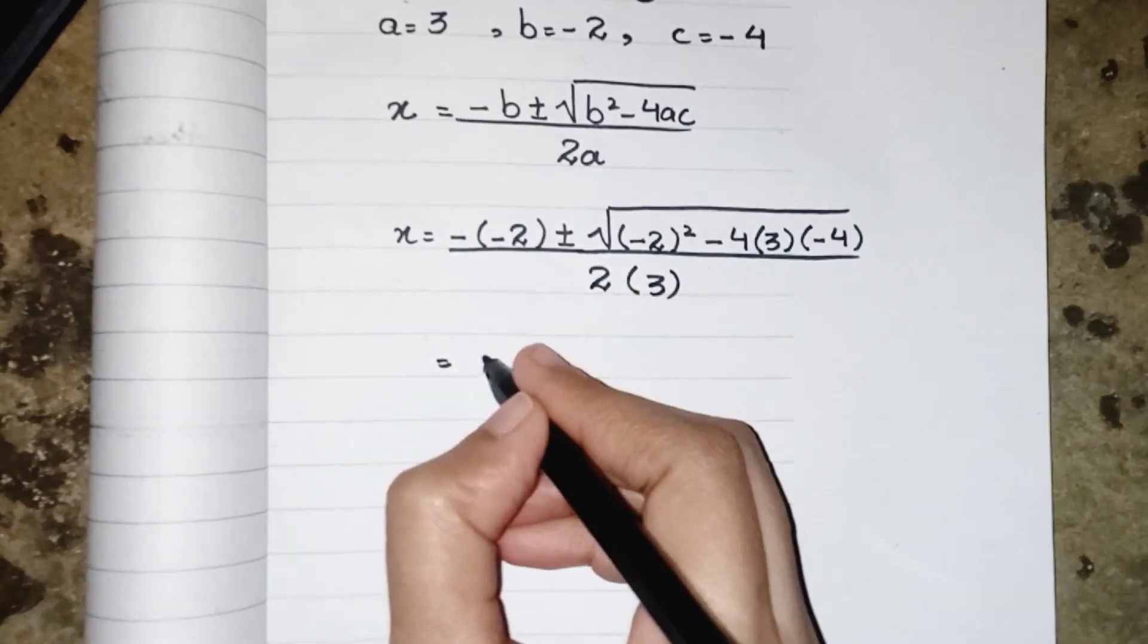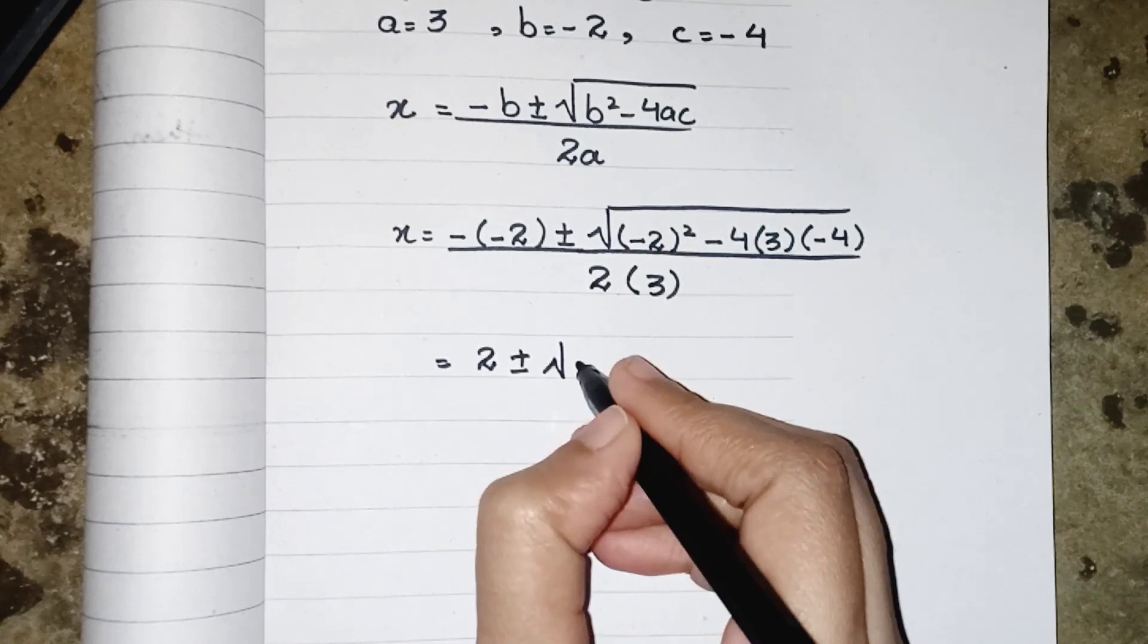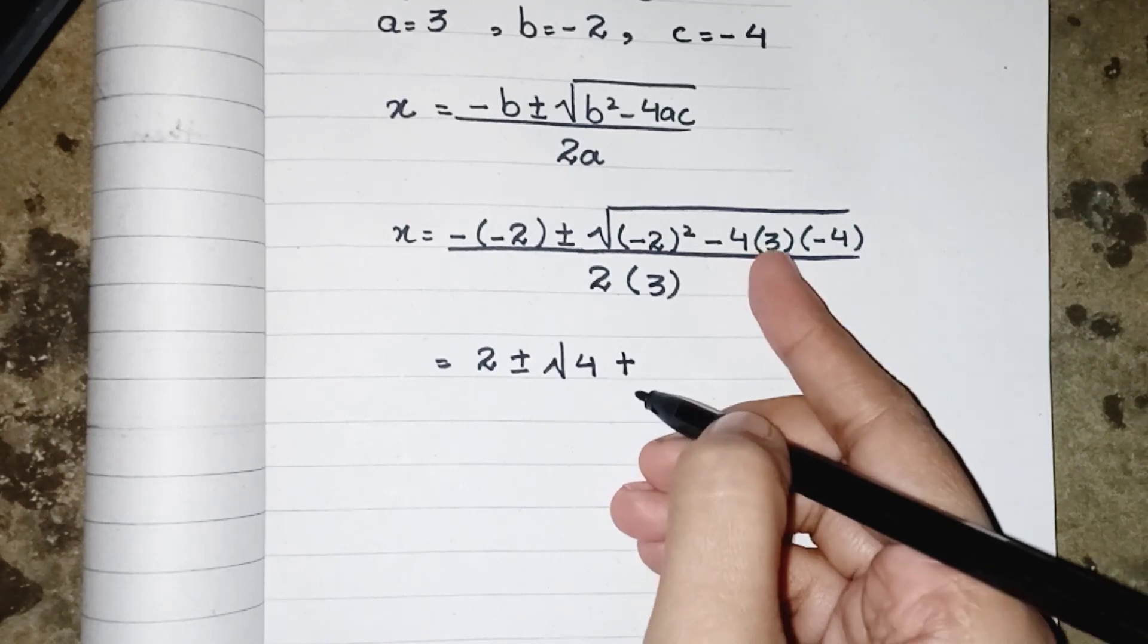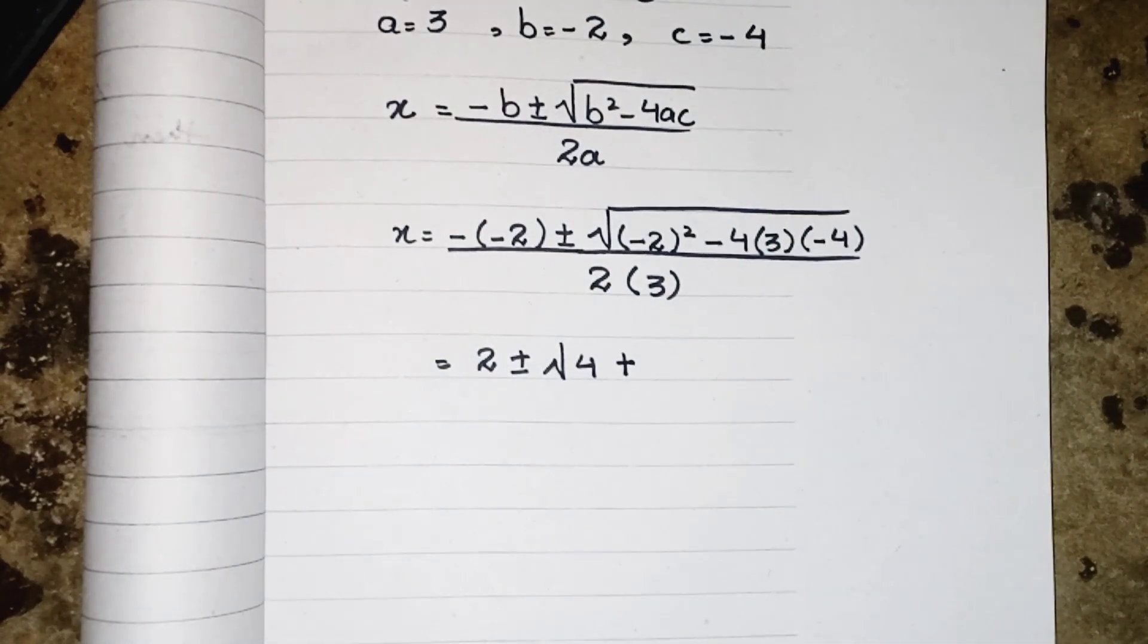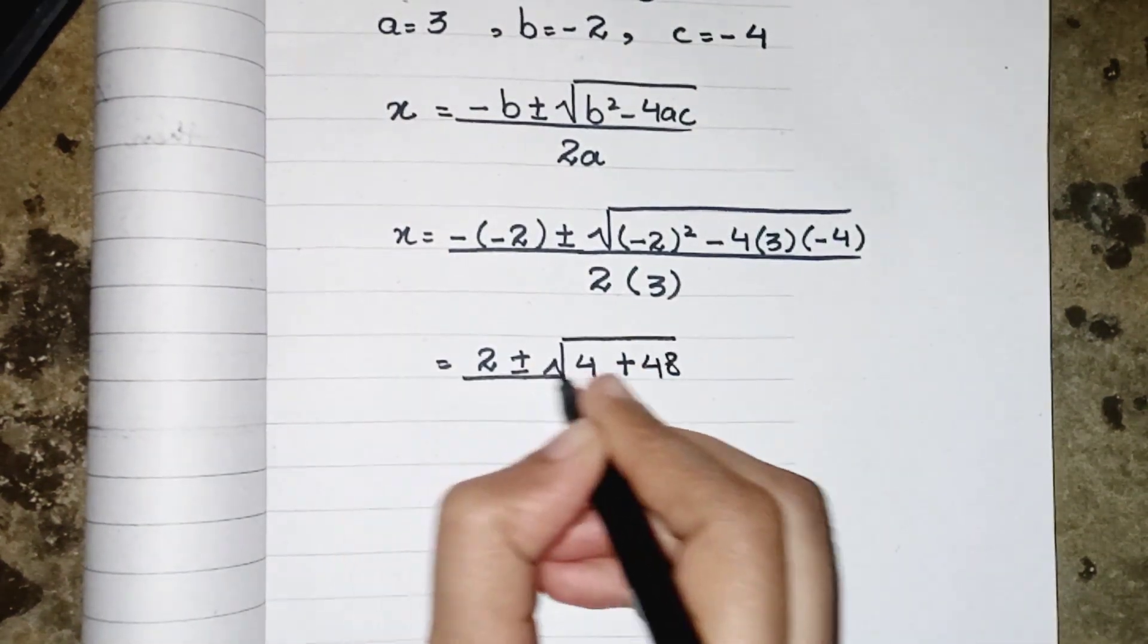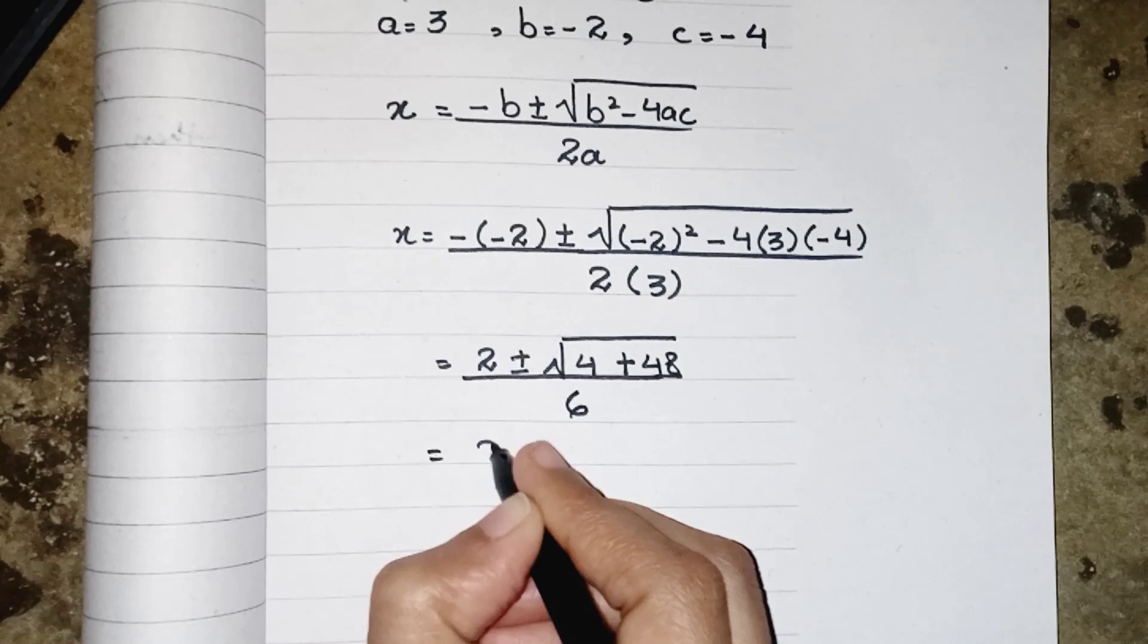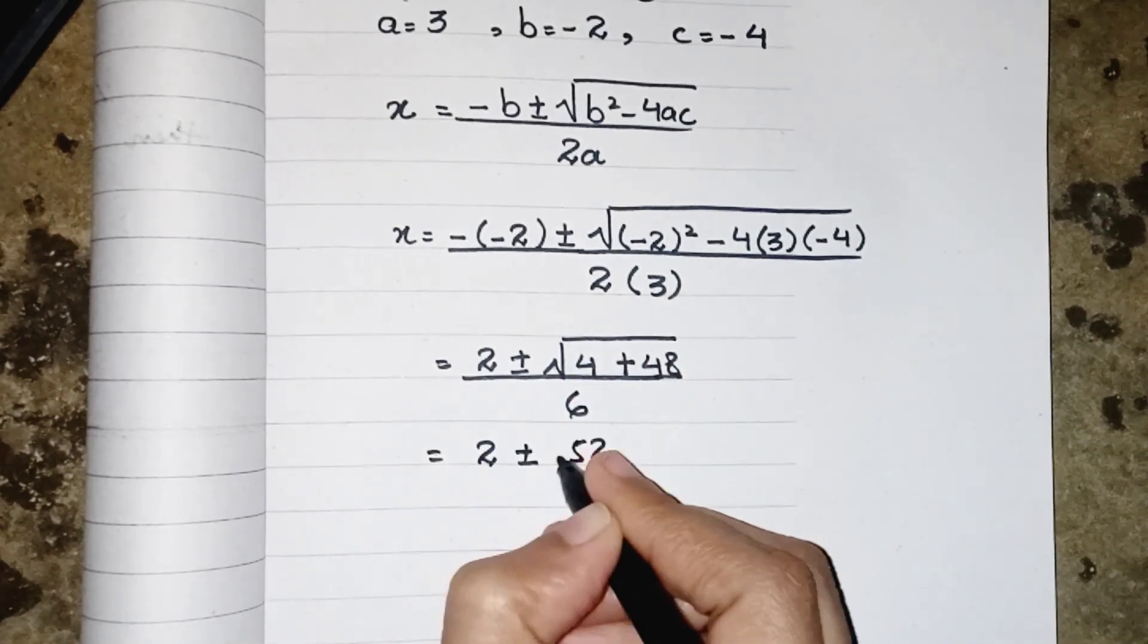Minus minus is plus so we can write only 2. The square of -2 is 4, minus minus is plus 4 times 3 is 12, 12 times 4 is 48 upon 2 into 3 will result as 6. 2 plus minus √(4 + 48) = 52.